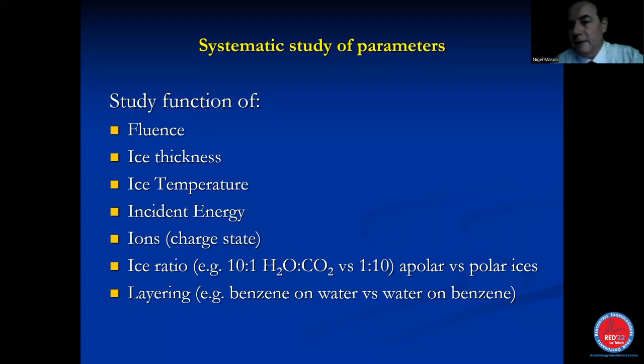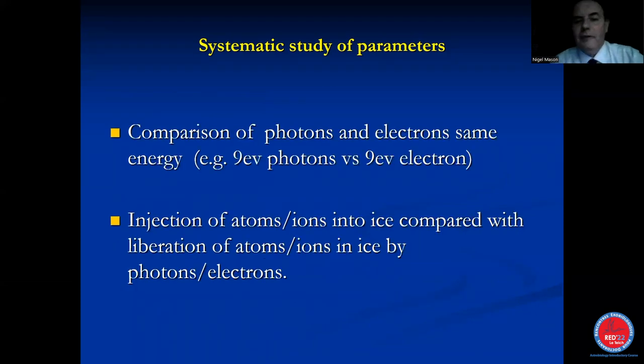Is a 10 to water to one carbon dioxide, different from a one water to 10 carbon dioxide we call polar and apolar ices. We can have layering where we can have, for example, a polyaromatic hydrocarbon on top of water, which might be different upon having water on top of the polyaromatic hydrocarbon. We want to compare putting in the same nominal energy, say nine electron volts from a light source with nine electron volts from an electron source, because photons obey selection rules. Electrons do not. So electrons can access what we call the forbidden states and introduce new dissociation mechanisms of the molecule, which may lead to new chemistry, which is different from the photon chemistry.